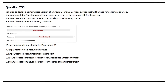Question number 233. You plan to deploy a containerized version of an Azure Cognitive Services service that will be used for sentiment analysis. You configure contoso.cognitiveservices.azure.com as the endpoint URI for the service. You need to run the container on an Azure virtual machine by using Docker. You need to complete the following command. Which value should you choose for placeholder 1?